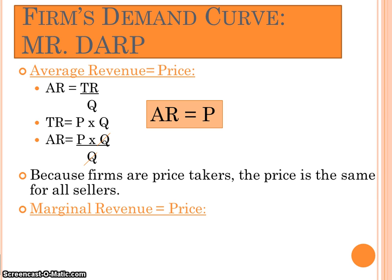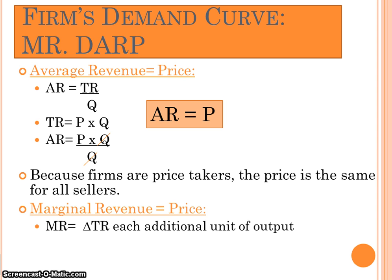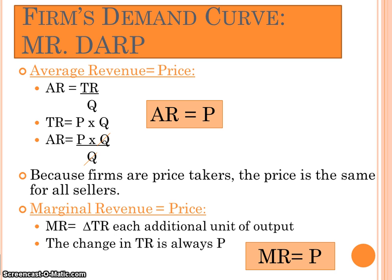Now let's show why marginal revenue equals price. Marginal revenue is the change in total revenue for each additional unit of output, and that change in total revenue is always going to be the price you charge for the product. Since the price is always constant, marginal revenue equals price. This proves why MR equals D equals AR equals P in perfect competition.